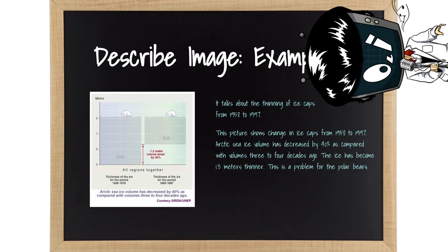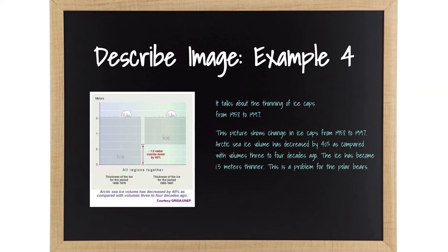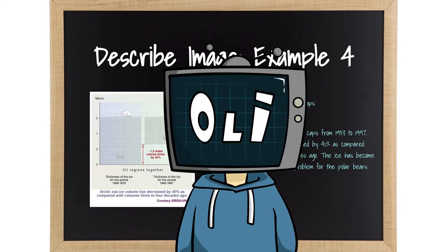Here's the easy answer. This picture shows change in ice caps from 1958 to 1997. Arctic sea ice volume has decreased by 40% as compared with volumes 3 to 4 decades ago. The ice has become 1.3 meters thinner. This is a problem for the polar bears. I'm done.